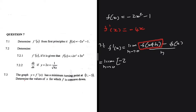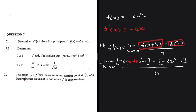We have -2x², so instead of x we put (x+h) and then we square that, and then we have our minus 1. That's the first part done. Then the second part we subtract f(x) as it is, so we have minus 2x² minus 1, and then we divide everything by h. This is how you do differentiation using first principles.